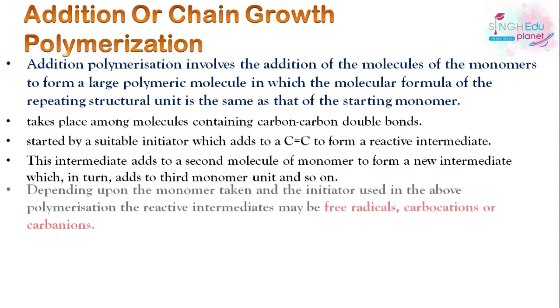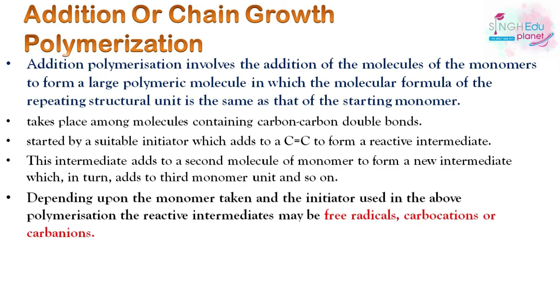Depending upon the monomer and initiator, the intermediates can be free radicals, carbanions, or carbocations. So we have three mechanisms. The free radical mechanism will be discussed in this video, while the ionic mechanisms will be discussed later.